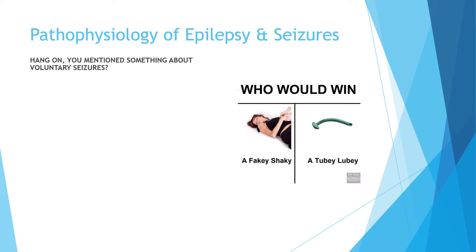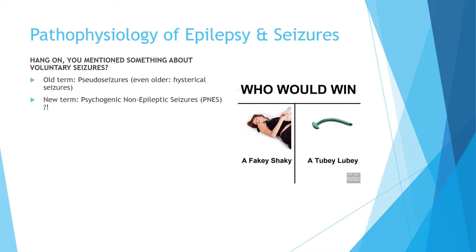Not all seizures are related to excessive neuronal excitability. Non-epileptic seizures — historically called pseudo-seizures or hysterical seizures — are now termed psychogenic non-epileptic seizures. Clinically, psychogenic seizures can mimic epileptic seizures, but there is no excessive neuronal activity; instead there is a psychological underpinning manifesting as physical symptoms.